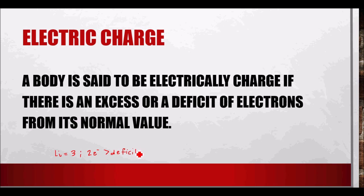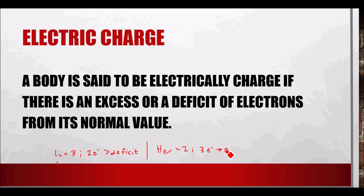For example, helium has an atomic number of two. If it is added one of the electrons of lithium, it will then have three electrons, creating an excess. Basically, if there is an excess or a deficit of electrons in a body or substance, it is said to be electrically charged.